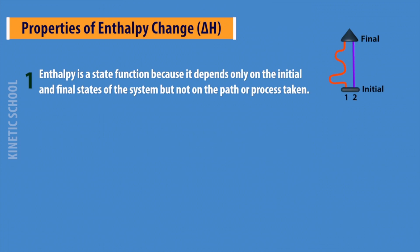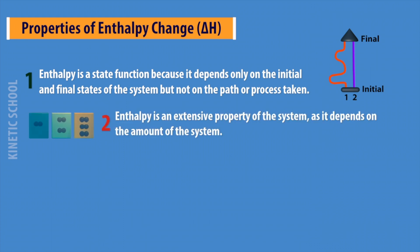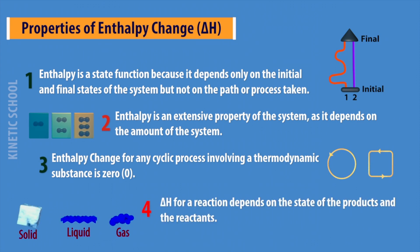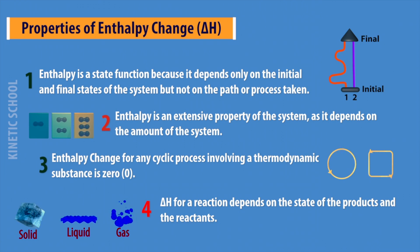Enthalpy is a state function because it depends only on the initial and final state of the system, not on the path or process taken. Enthalpy is an extensive property of the system, as it depends on the amount of substance. The enthalpy change for any cyclic process involving a thermodynamic substance is zero. Delta H for a reaction depends on the state of the products and the reactants.